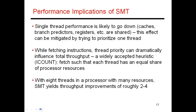When I do simultaneous multithreading, what I'm trying to do is increase my overall throughput. I'm trying to maximize the number of instructions that get executed every single cycle, and I'm trying to minimize the underutilization of the processor. So if one thread ran by itself, it has an IPC of 1.0.